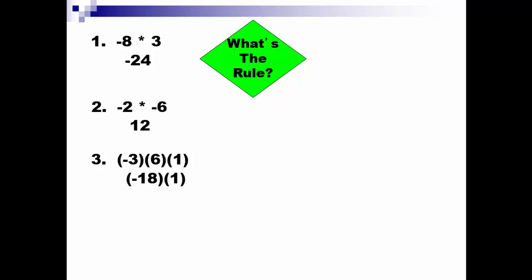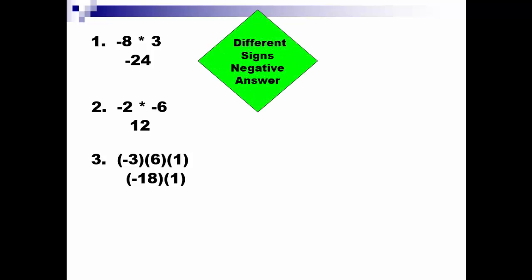We're multiplying, and the signs are different — negative times a positive — so the answer will be negative. 18 times 1 is 18, and a negative times a positive is a negative. So our answer is negative 18.